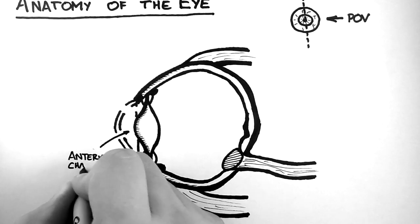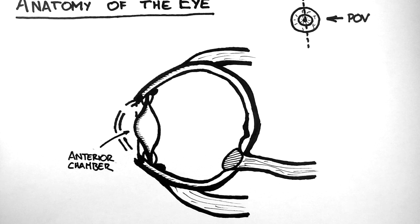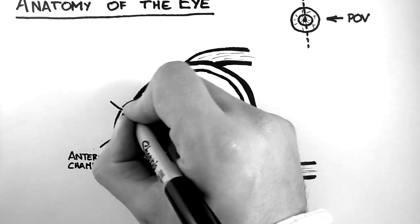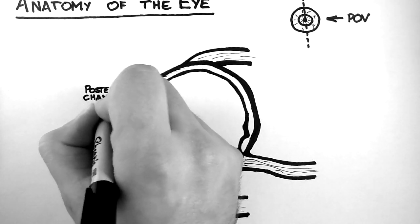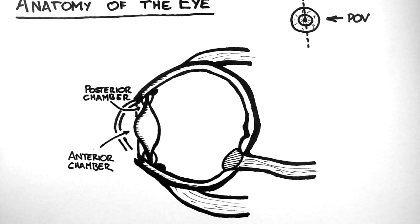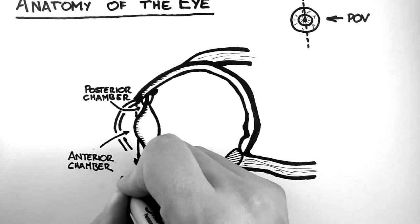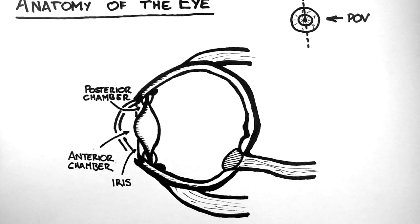The anterior chamber is this space at the front of the eye. Just behind it, we have the posterior chamber. These two chambers are filled with a fluid called the aqueous humour. The anterior and posterior chambers are separated by the iris, which is the coloured part of the eye.